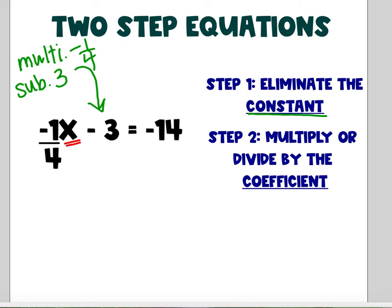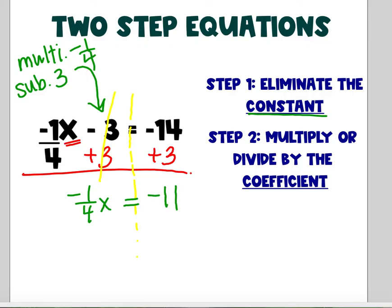Let's draw our line. Negative 3 plus 3, 0. So I'm left with negative one-fourths x is equal to what's negative 14 plus 3? Negative 11.